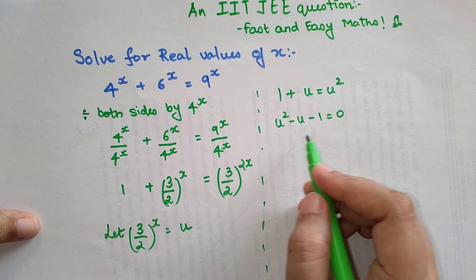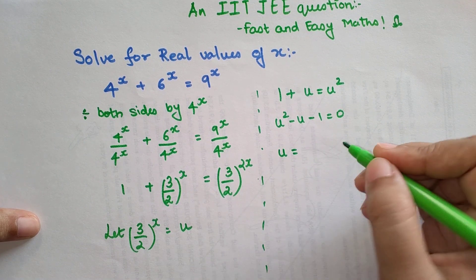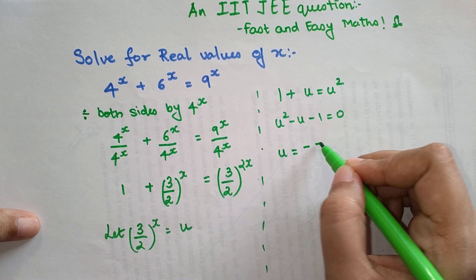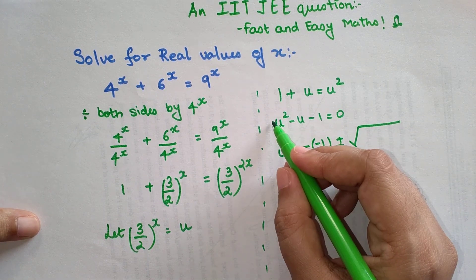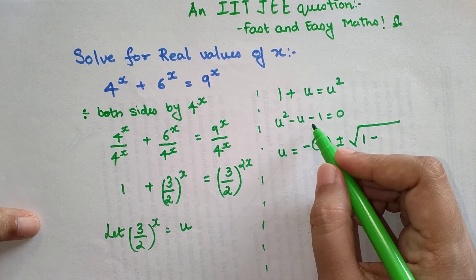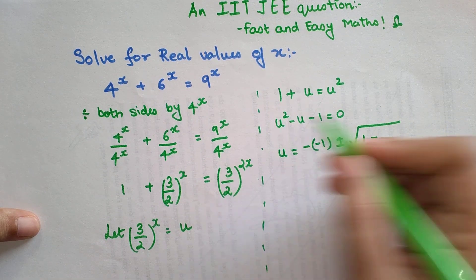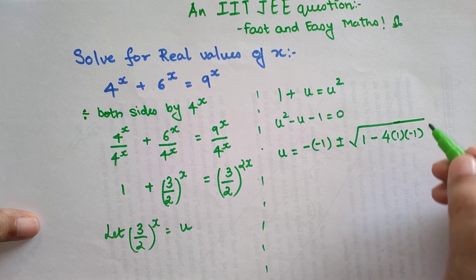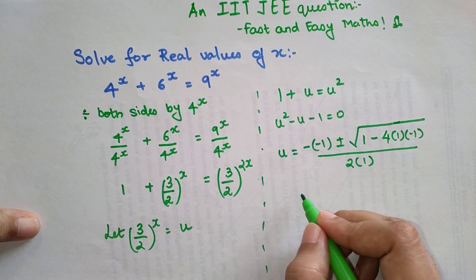This cannot be factorized directly, so we will use the formula which is u equals minus b, that is minus of minus 1, plus minus root of b squared, that is minus 1 squared so 1 minus 4 into a times c, which is 4 times 1 times minus 1, upon 2 into 1, that is 2.